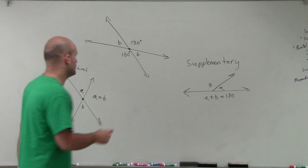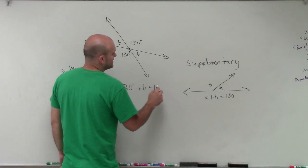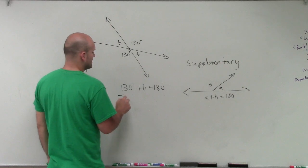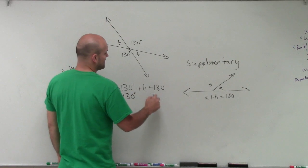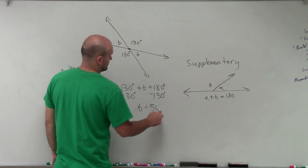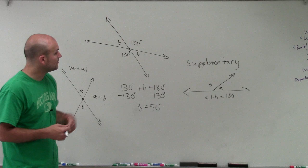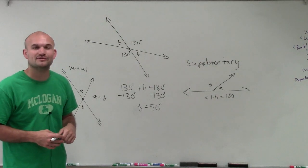So no matter what, we know we can write an equation of 130 degrees plus B equals 180. Then I just now solve for my variable. And there you go. We now determine that our variable, our missing value, is going to be 50 degrees. Thanks.